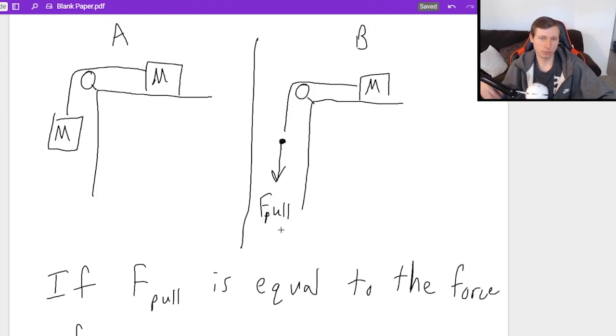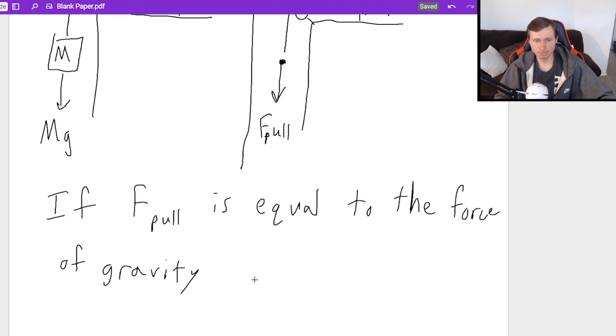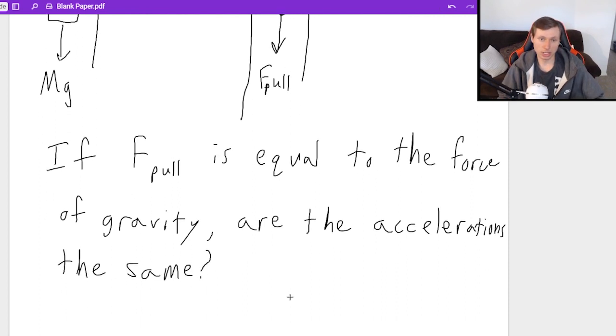And what my question is going to be. If F-pull is equal to the force of gravity. In other words we see F-pull going down like this. It's like someone's hand pulling it down or something. I'm saying that's equal to the force of gravity. MG here going down. If those forces are equal to each other. Are the accelerations the same? That is my question.